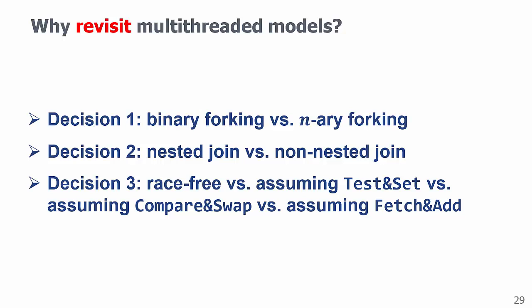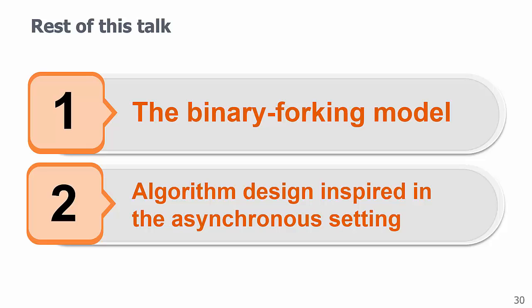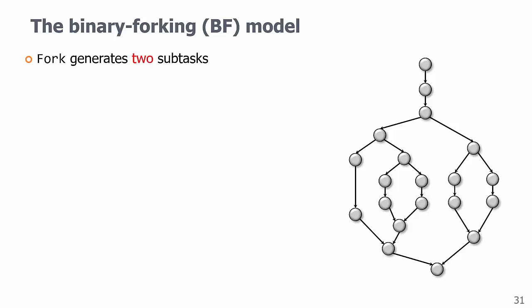In this paper, we investigate the decisions and introduce the base model, which is the binary forking model. We made two decisions. First, fork creates two subtasks.